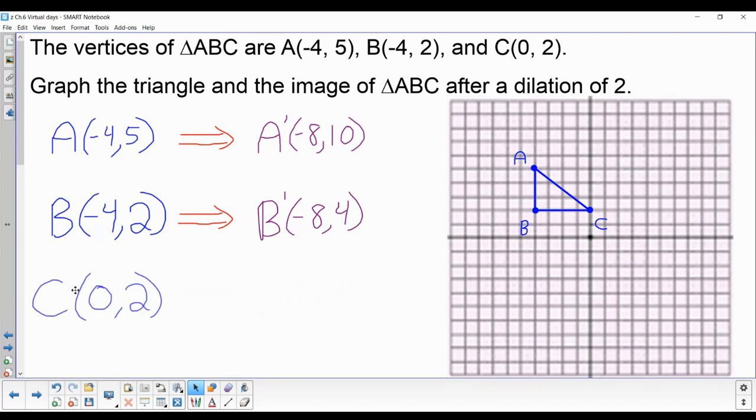And for point C, to get the image of C, I will again multiply everything by 2. So the image of C, 0 times 2 is 0, and 2 times 2 is 4. Once I have the points that are the image, I graph them.